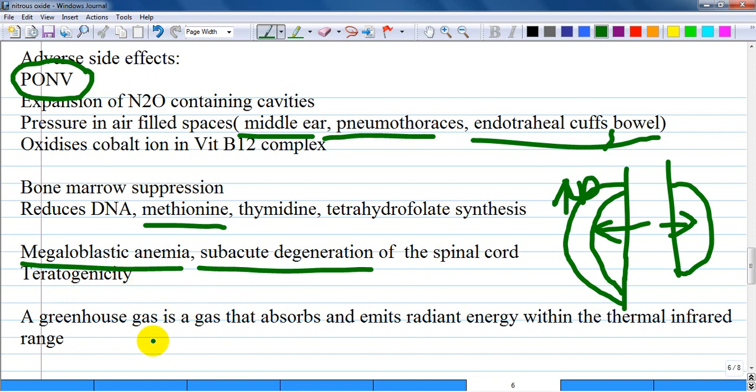Nitrous oxide is a greenhouse gas that absorbs and emits radiant energy in the thermal infrared range, making it an environmental pollutant.